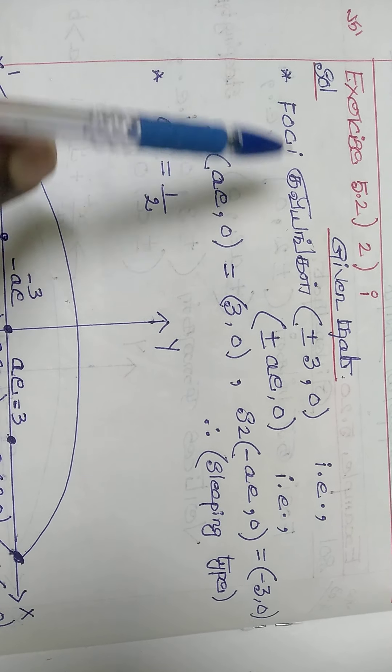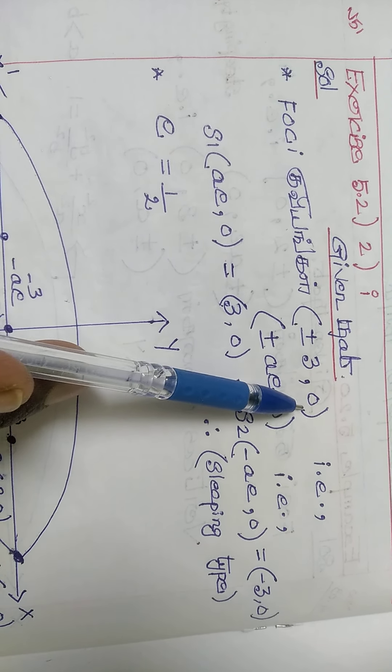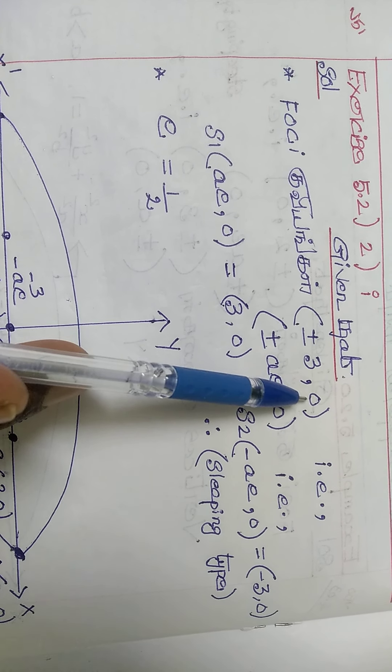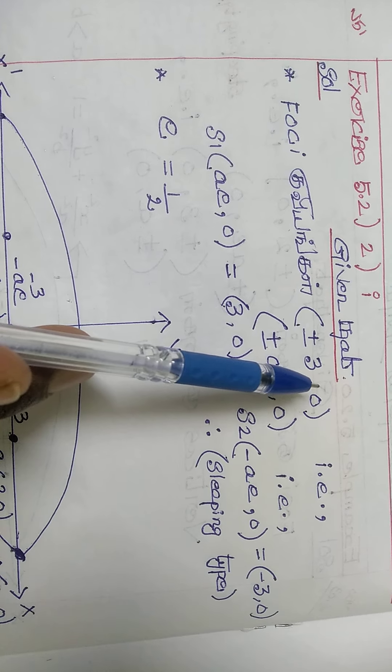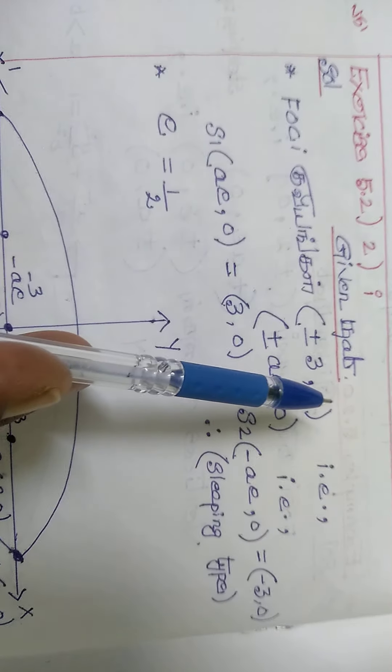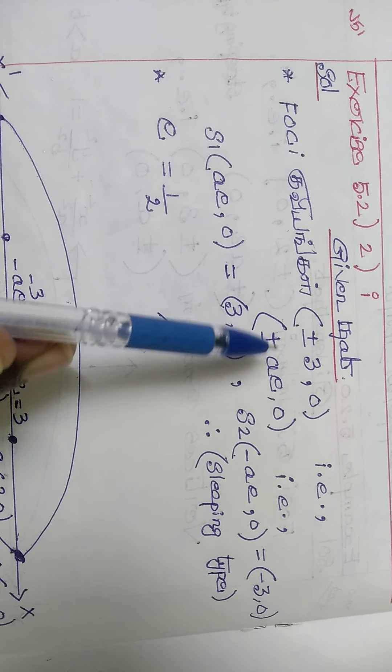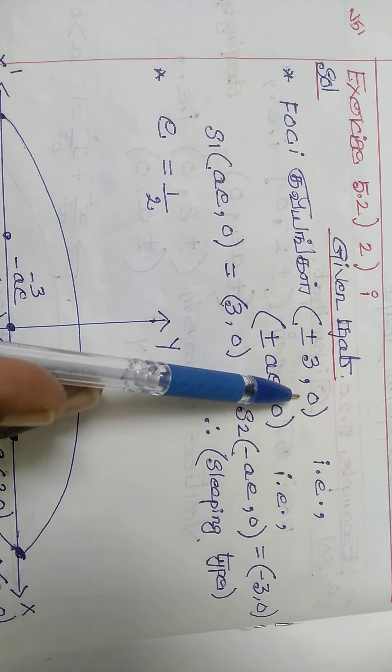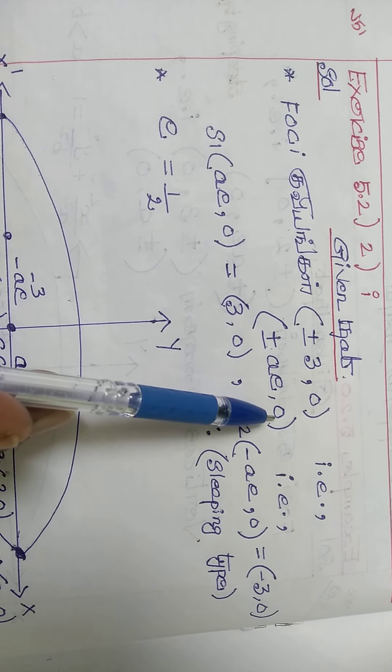The focus is at plus or minus 3, 0. This is coming from the standard form. The center is at 0, 0 on the x-axis, and A e is at 0 coming from the foci.